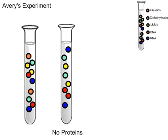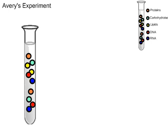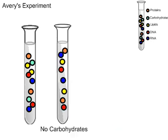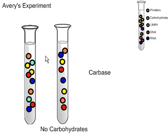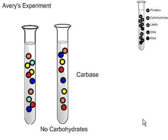Next, he thought maybe it's carbohydrates. So he mixed in carbase, which takes out the carbohydrates — shown in bright green. With the carbohydrates removed, he mixed the dead S strain with live R strain and put it in the mouse. Transformation still happened — the mouse still died. So he knew it was not carbohydrates either.